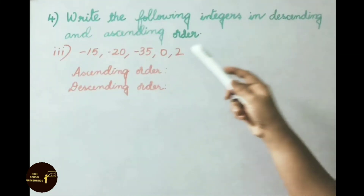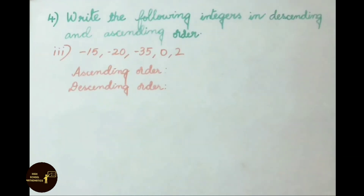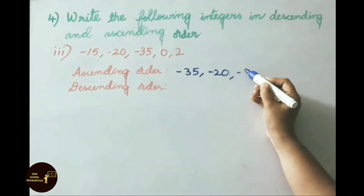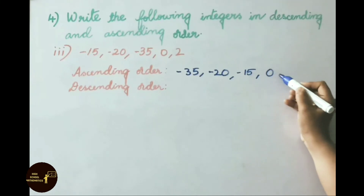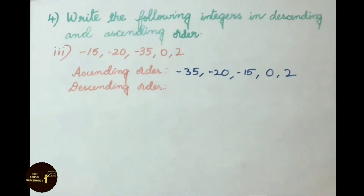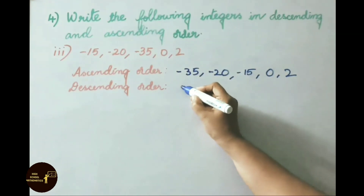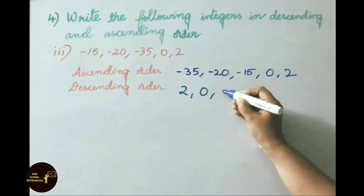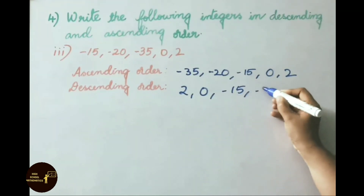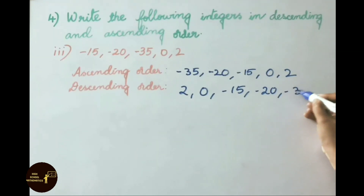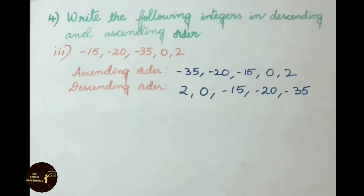Third set: -15, -20, -35, 0, 2. Ascending order: -35, -20, -15, 0, 2. Descending order (greatest to smallest): 2, 0, -15, -20, -35.